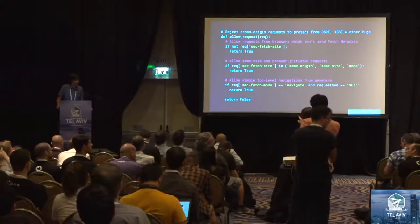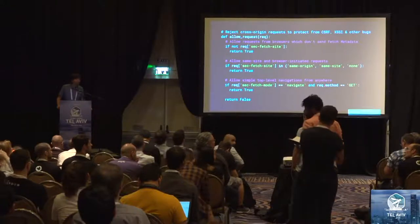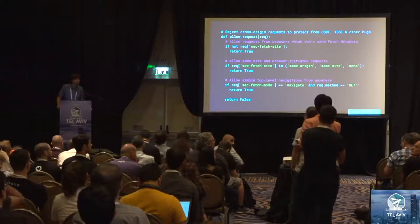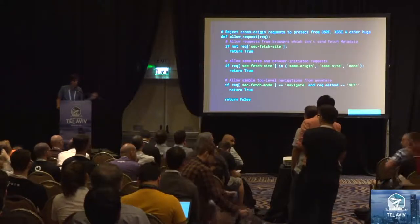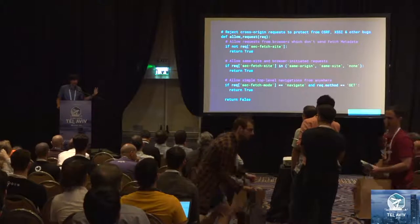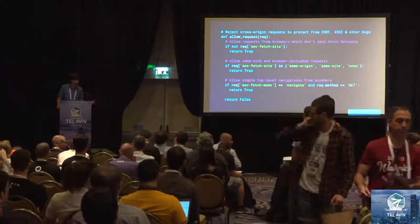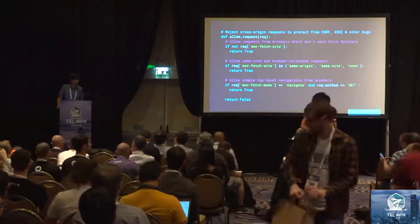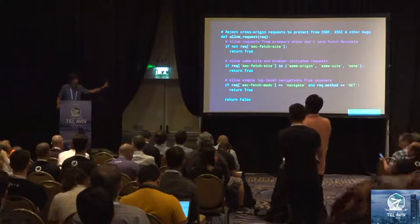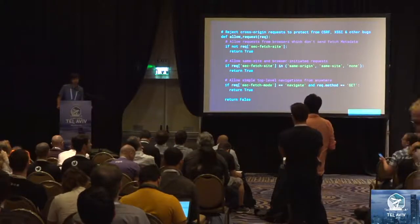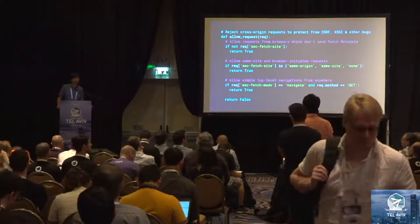So basically we're allowing cross-site GET navigation but blocking cross-origin POST? Yes — if it's a cross-origin POST, that logic would block it. If you have a CORS endpoint that is expected to receive cross-origin POST requests, you can have an additional allowlist to allow that kind of request.